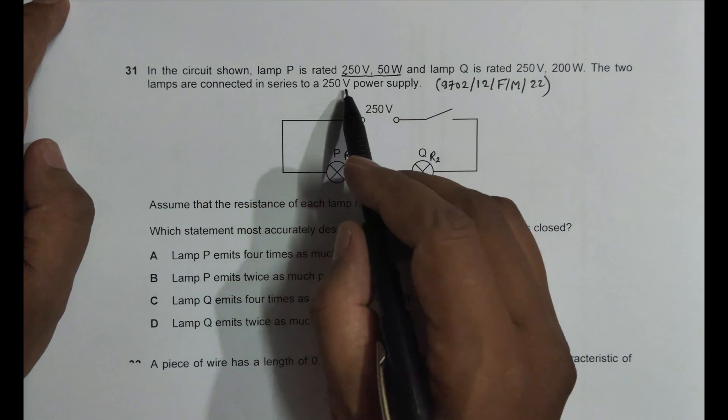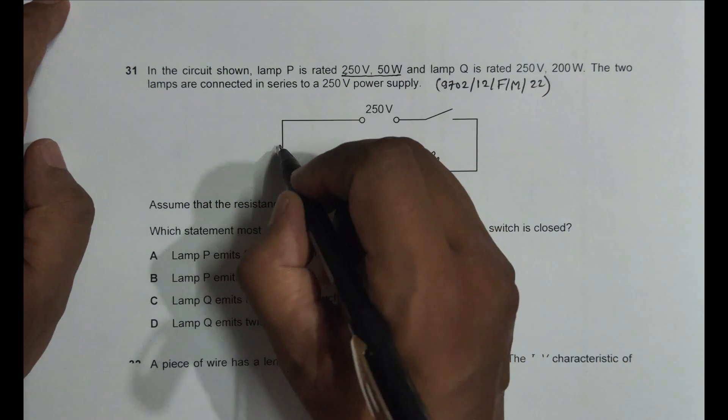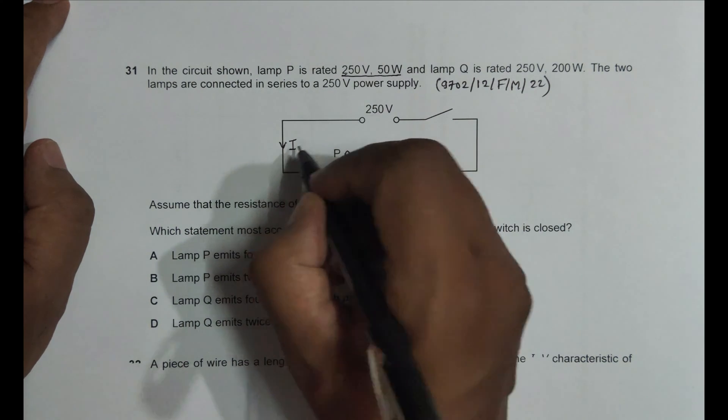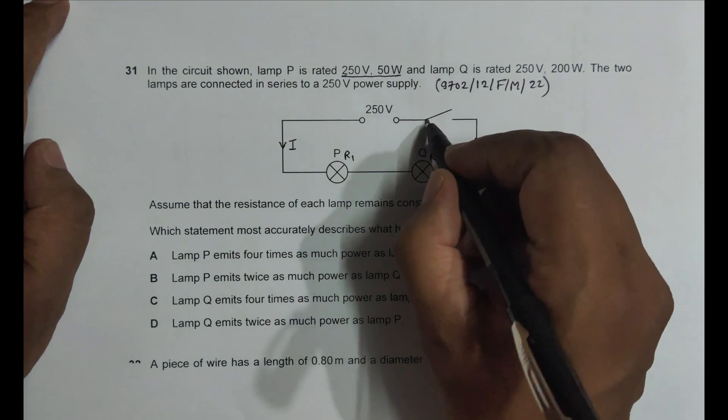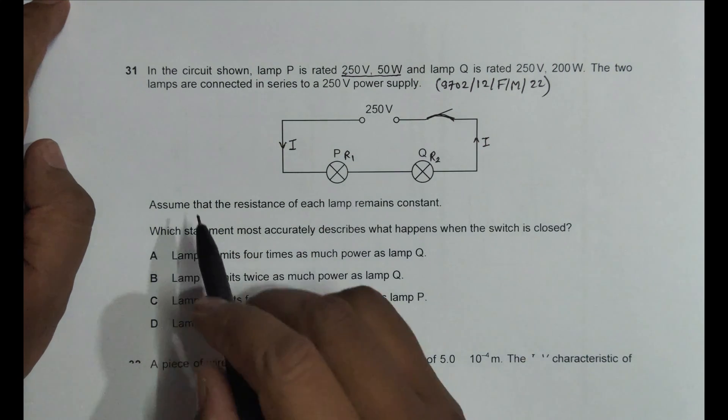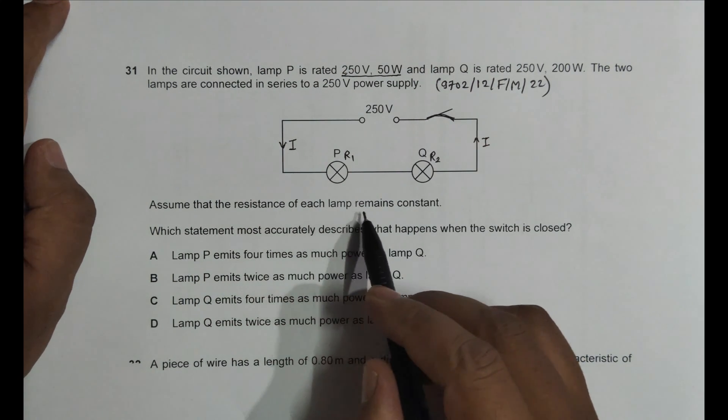The two lamps are connected in series to 250 volt power supply. Series means that the current at every portion of the circuit will be same when this switch is on. Assume that the resistance of each lamp remains constant.